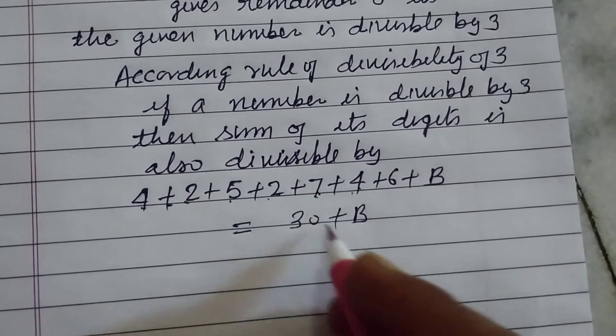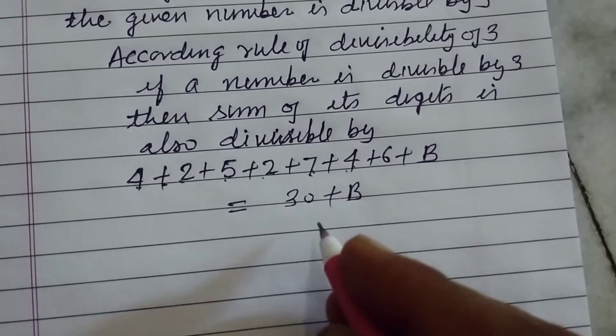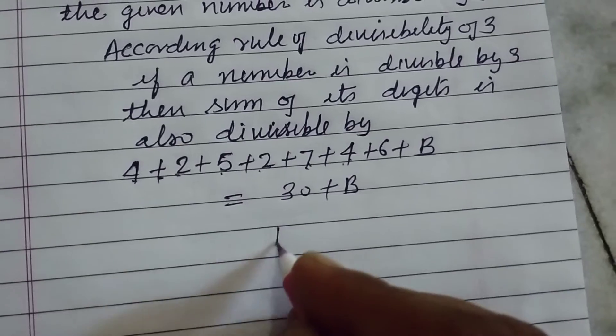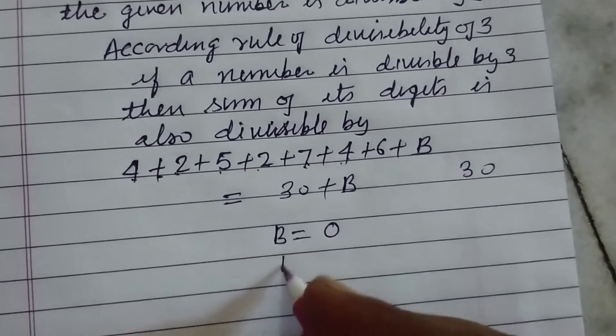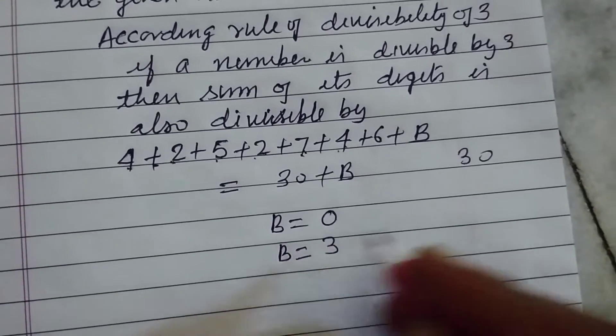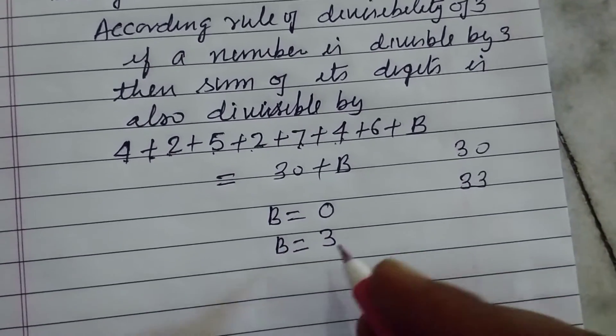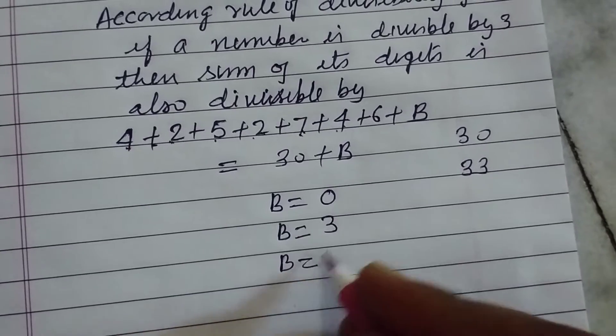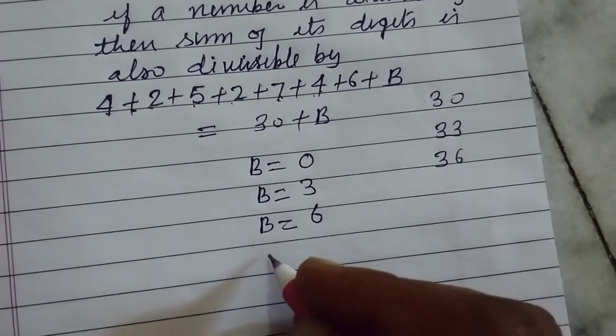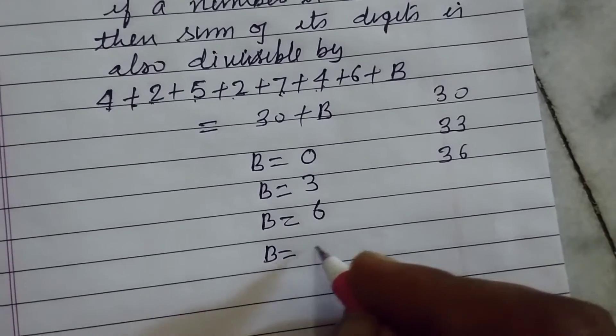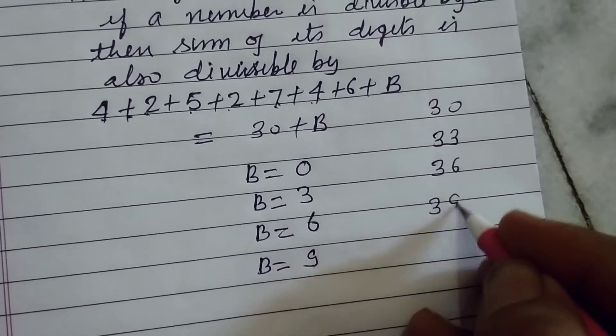To make this number divisible by 3, B should be 0, so we got 30. B is 3, we got 33 which is divisible by 3. B will be 6. B should be 9, so we got 39.